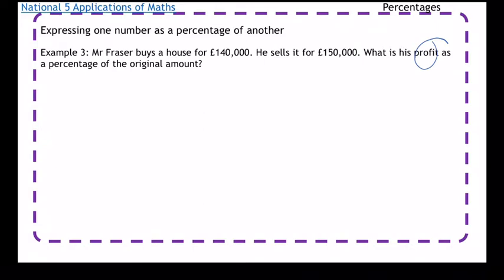So we've got to find how much profit he's made. We've got £150,000 and he bought it for £140,000, so he's made £10,000 profit.